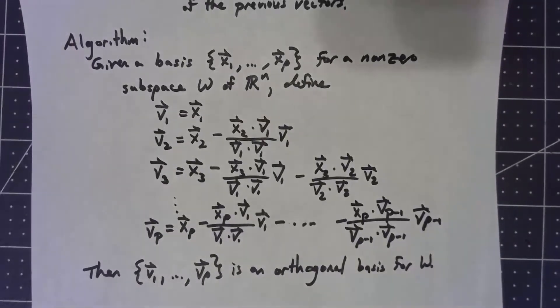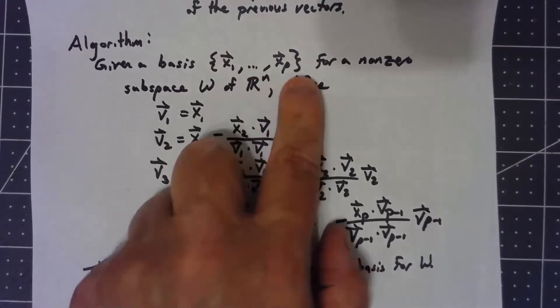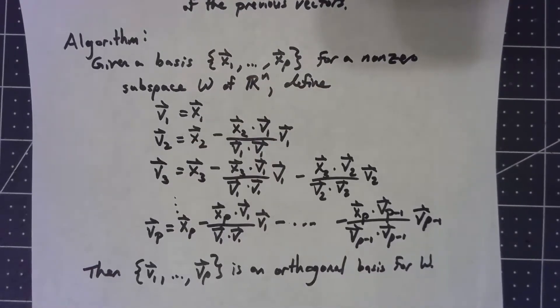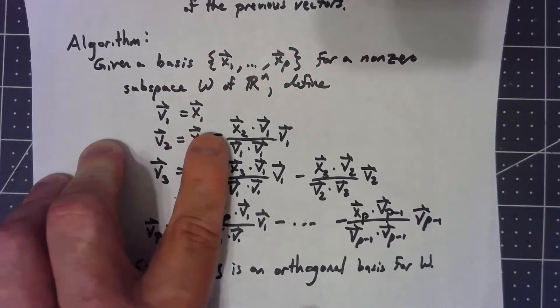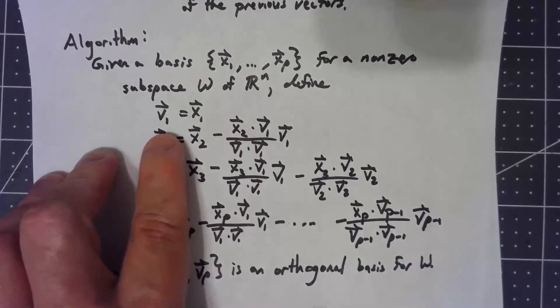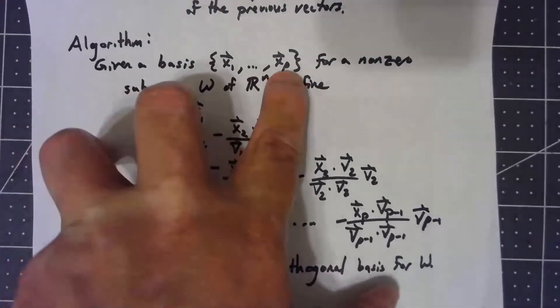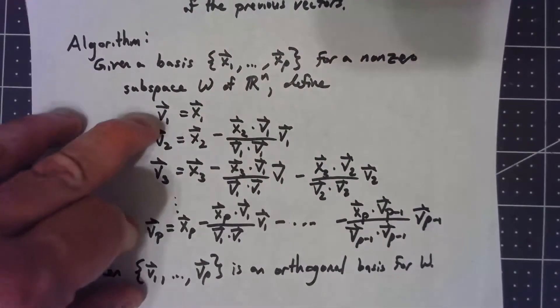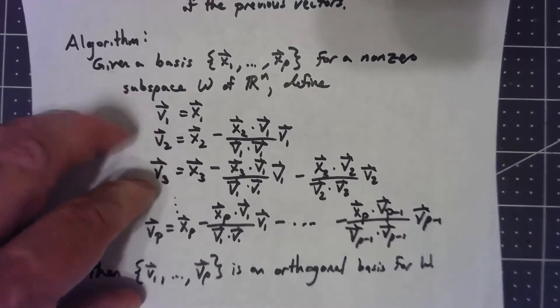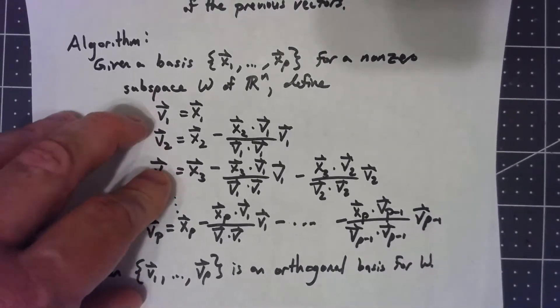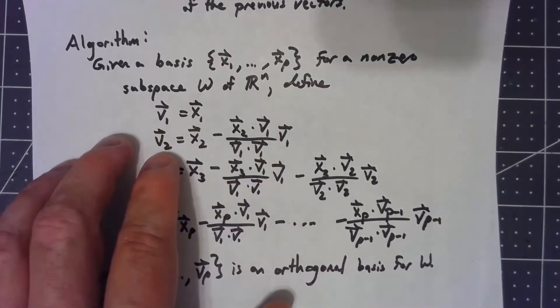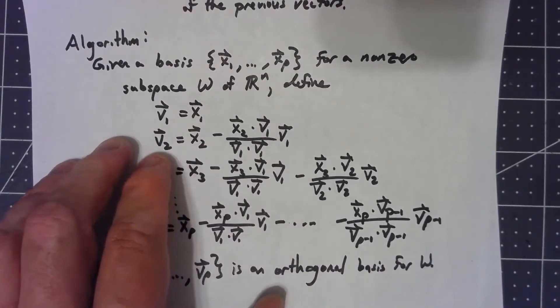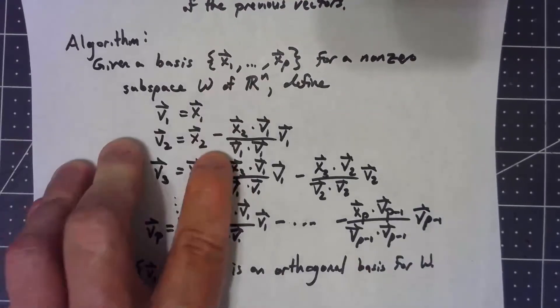So writing that out as an algorithm, we're going to start with a basis which we're going to call x1 up to xp of vectors. The first vector is just the first vector we started with. We start with a set of vectors x, we're creating a set of vectors v, these v's are all going to end up orthogonal to each other. So the first one, because we don't have anything previously established, my first direction is just the first direction I had.